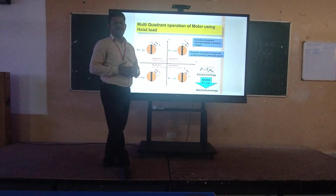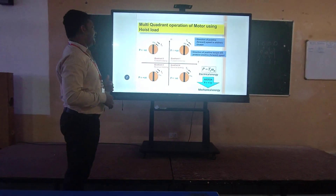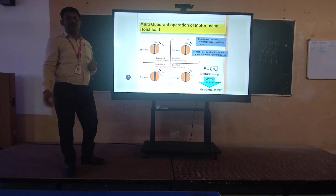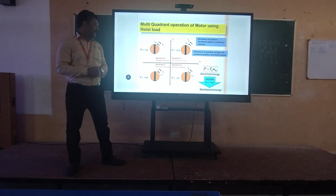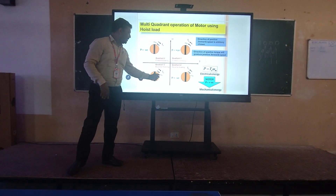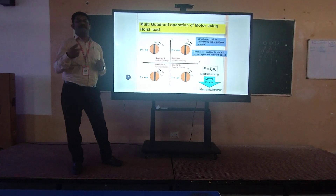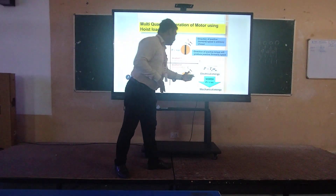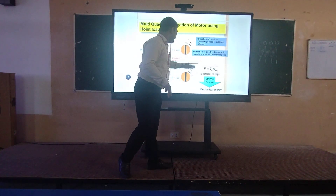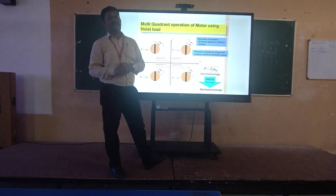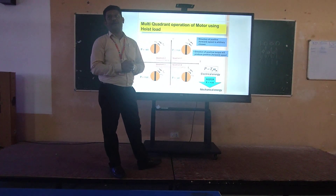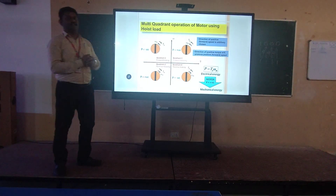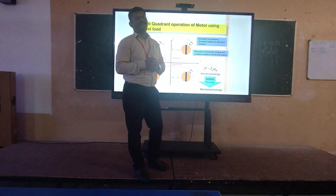The third one is the reverse motoring operation. Both components are in the same direction — both tau and omega are negative — so you get positive power. The fourth mode of operation is the reverse braking operation, where any one component is negative, so we get negative power. In this type of operation it is reverse braking.